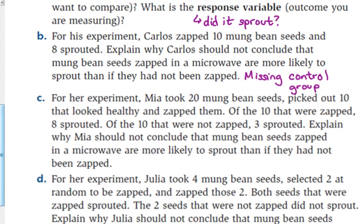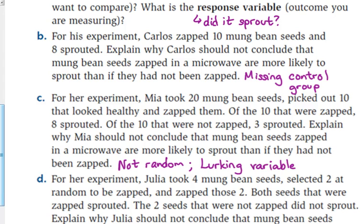Let's look at another scenario. Mia took 20 seeds and picked out 10 that looked healthy and put them in the microwave. Of those 10, 8 sprouted. Of the 10 not in the microwave, only 3 sprouted. This is not a good conclusion either — she picked out the healthy ones, so this was not random. We could also consider it a lurking variable: the healthier ones are probably more likely to sprout because they're healthy looking. If they don't look healthy, they're probably not going to sprout.